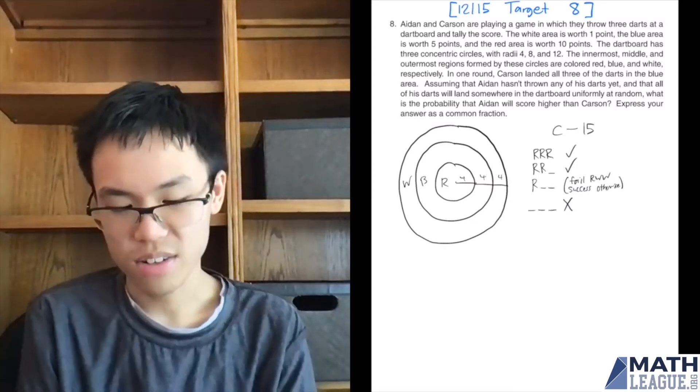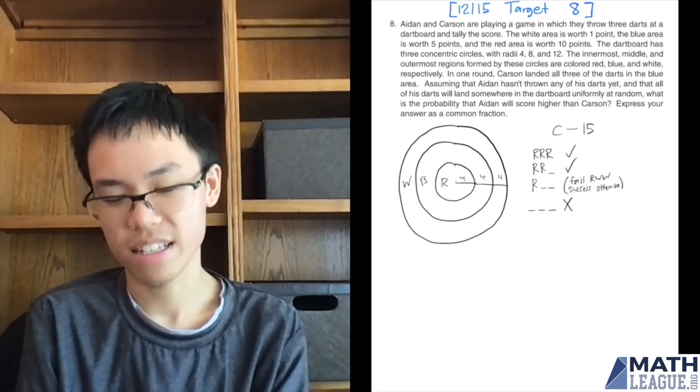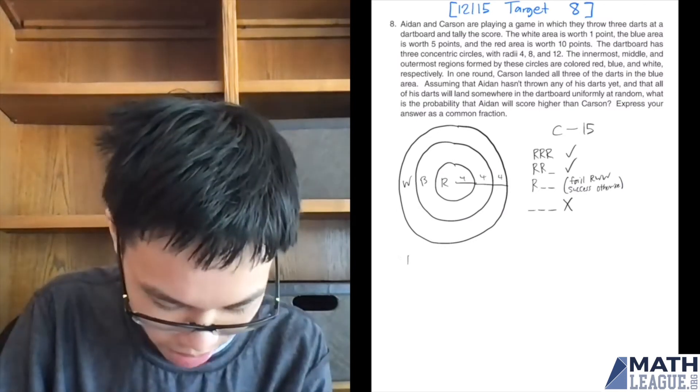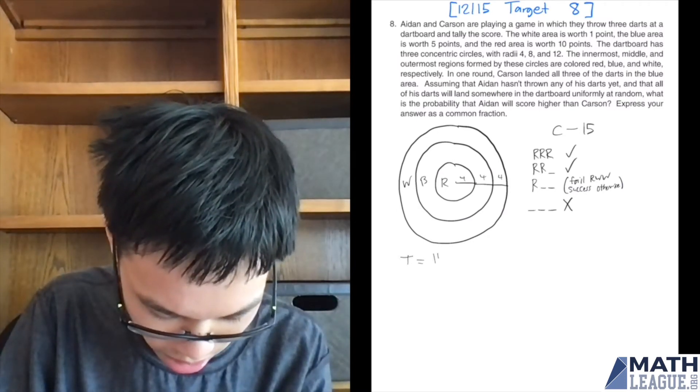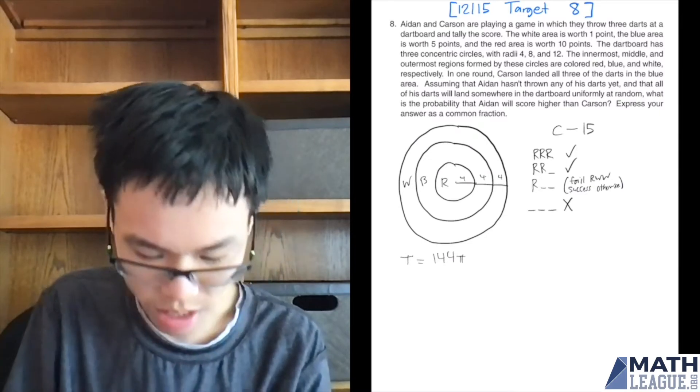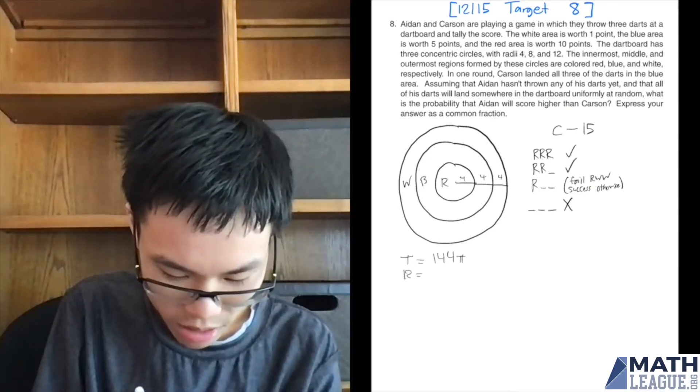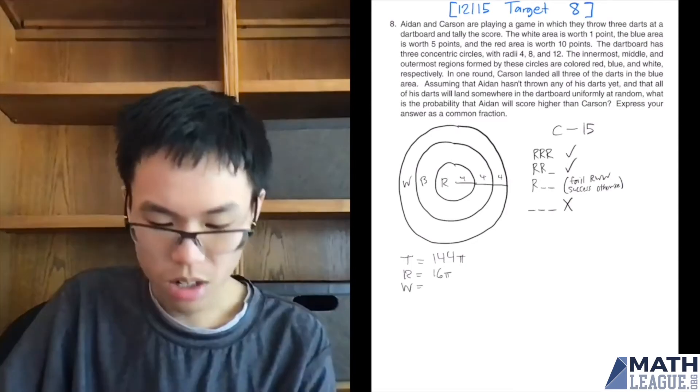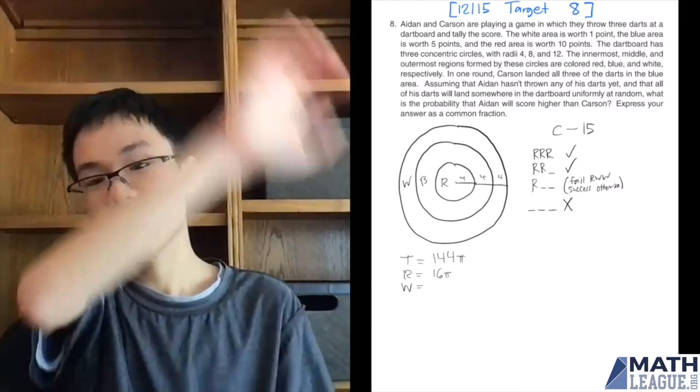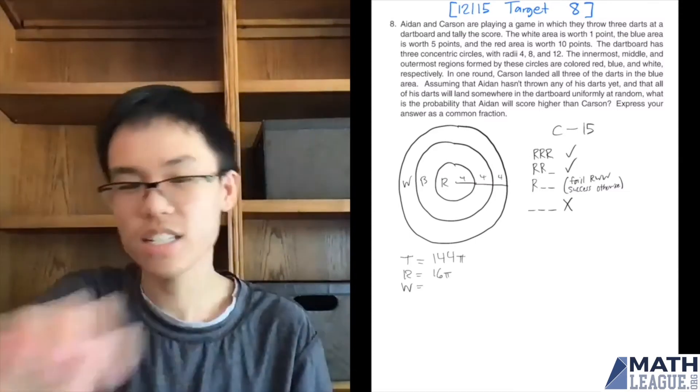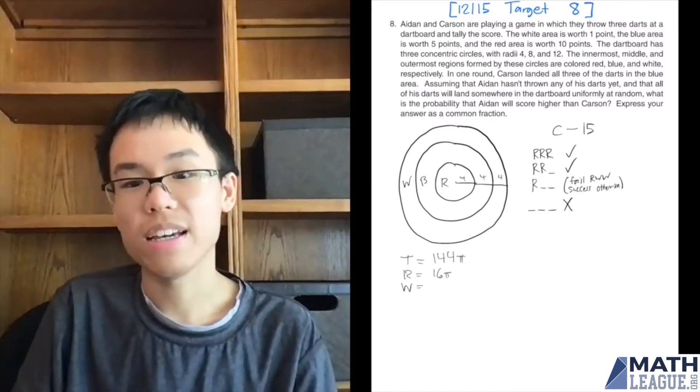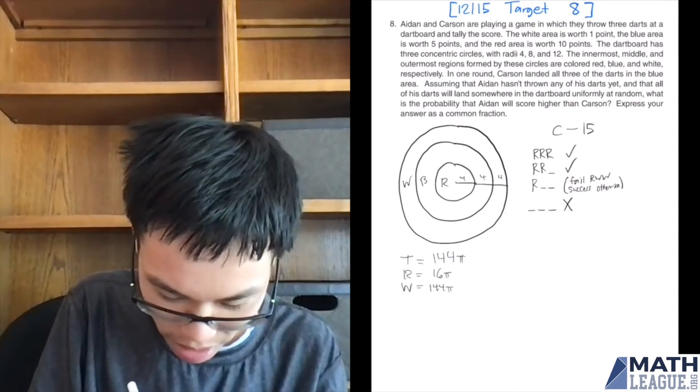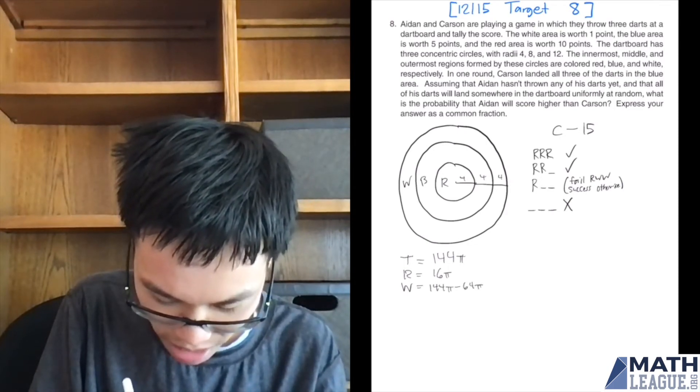So now it's time to think about how likely Aiden would land in these three areas. So first off, total area is going to be 144π because it's a dartboard of radius 12. Red area is going to be 16π. White area is going to be the entire dartboard, but there's the inner side that isn't white. So we're going to have to subtract that out. Inner part that's not white has radius 8. So 144π minus 64π, that's going to lead to 80π.